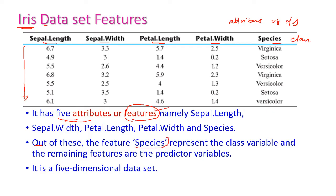The species is nothing but the class variable. There are three classes in this dataset, as we saw in the previous slide. Since we have five fields — five attributes — this is called a five-dimensional dataset, or 5-D dataset.